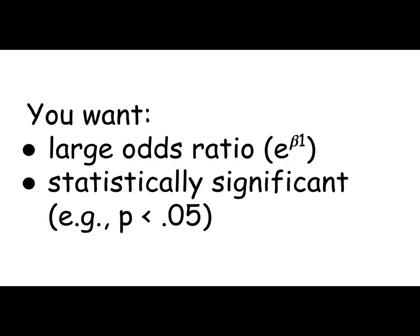So when you're reading a paper with logistic regression, what you're looking for is this large odds ratio, so a large e to the beta one, and you're looking for statistical significance, which tells you the probability that this could actually be zero.